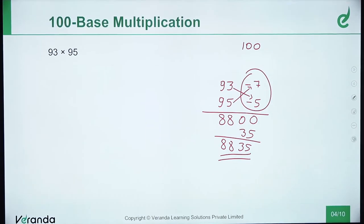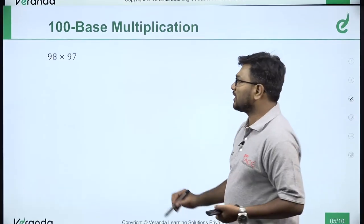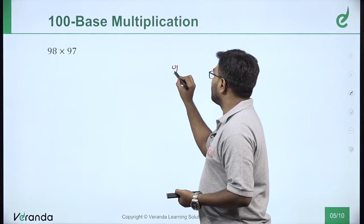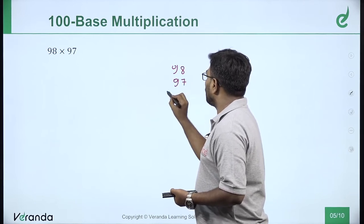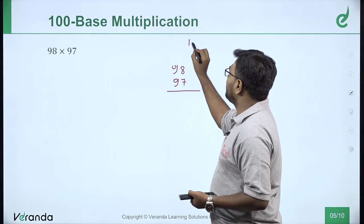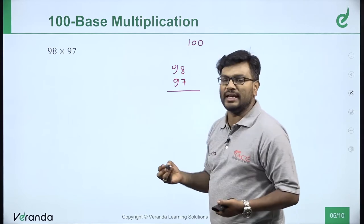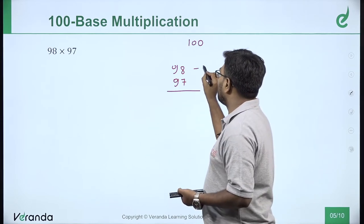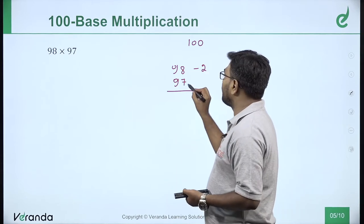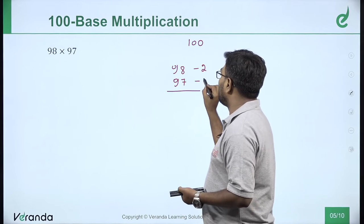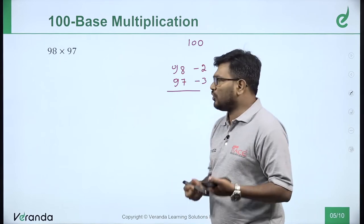Another question: 98 into 97. Base is 100 because both numbers are near 100. The differences are minus 2 and minus 3.